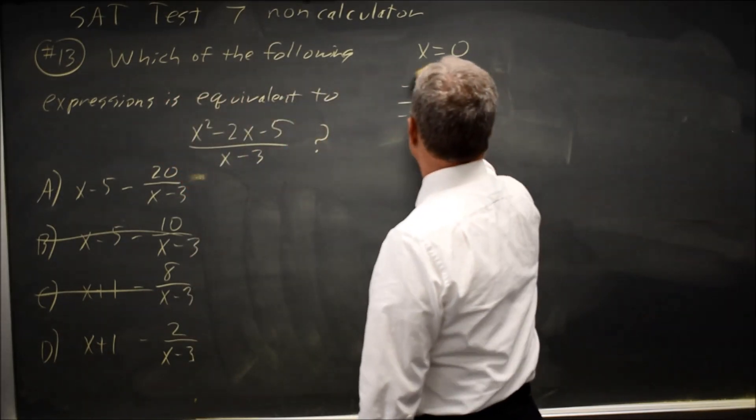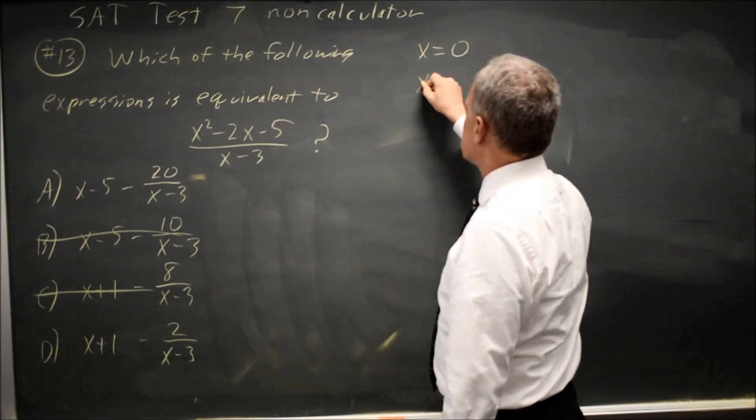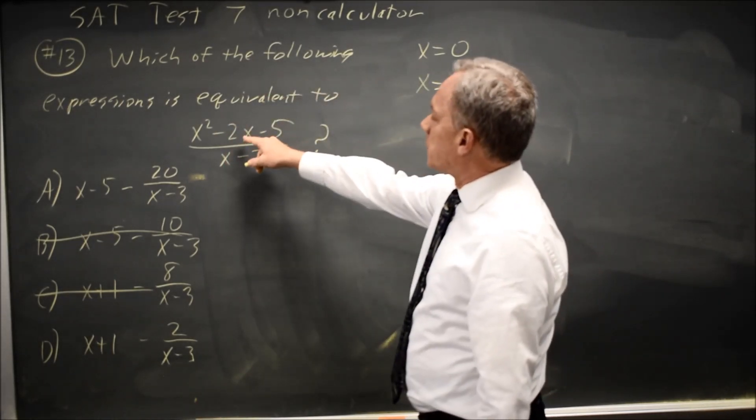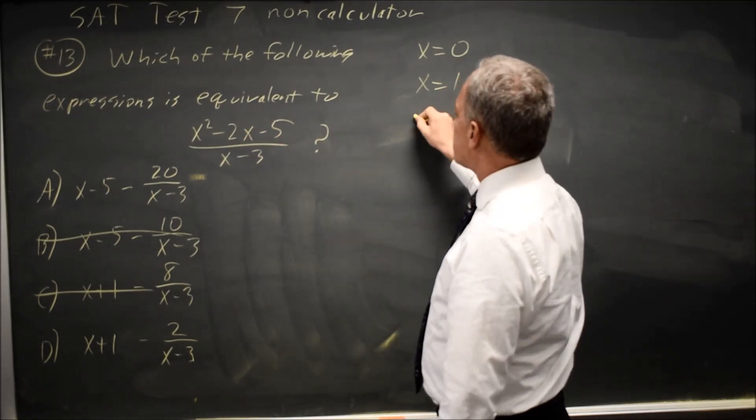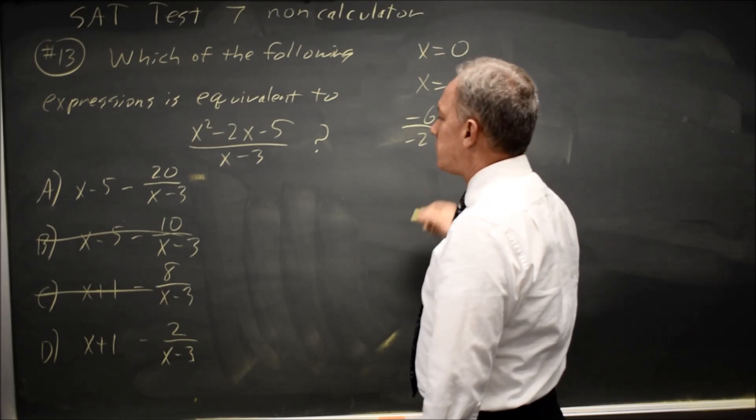Let's try another value. How about x equals 1? That would give me 1 minus 2 minus 5 is 1 minus 7 is negative 6 over 1 minus 3 is negative 2. So I should get positive 3.